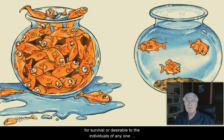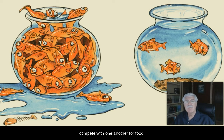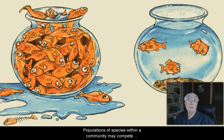And if it's something necessary for survival or desirable to the individuals of any one species, some or perhaps all individuals can be adversely affected. Individual bluegills in a pond, for example, compete with one another for food.